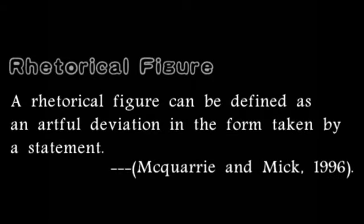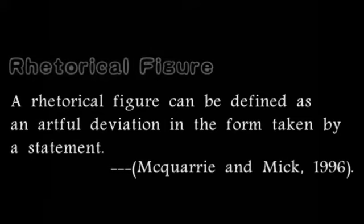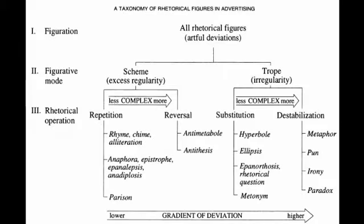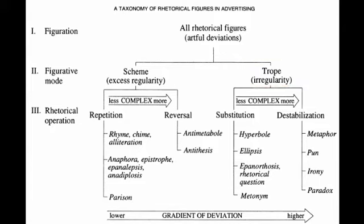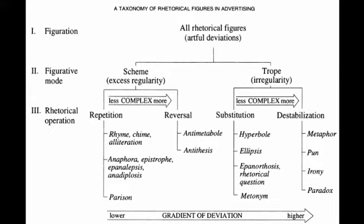A rhetorical figure can be defined as an artful deviation in the form taken by a statement. For better classification, we will use a rhetorical figure classification framework. All rhetorical figures can be divided into two main categories: one is scheme, which means excess regularity; the other is trope, which features irregularity. In the category of scheme, repetition and reversal are the main branches, while in trope, the two branches are substitution and destabilization.